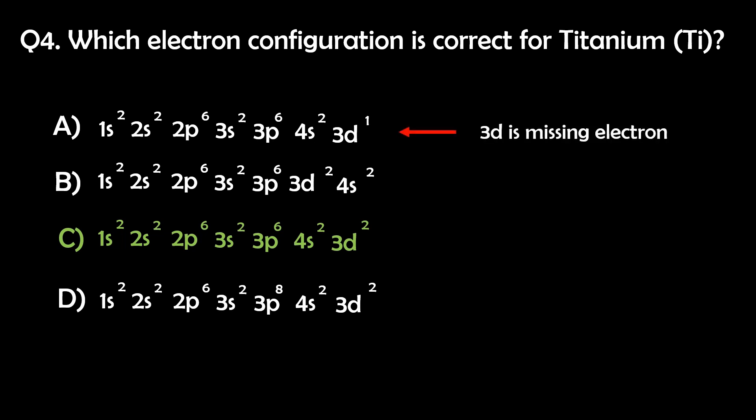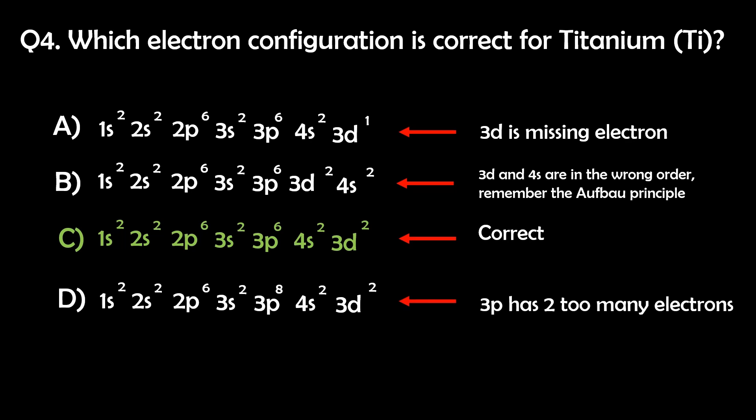A is missing an electron in the 3d subshell. B is filling the subshells in the wrong order. Remember the Aufbau principle. C is correct, and D has too many electrons in the 3p subshell.